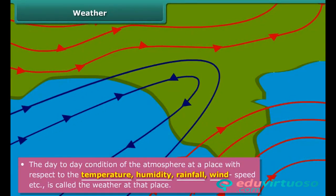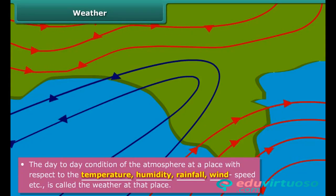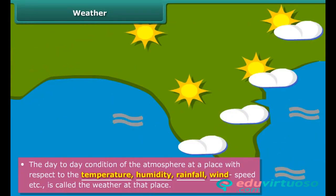The temperature, humidity, rainfall, wind, and other factors are called the elements of weather.